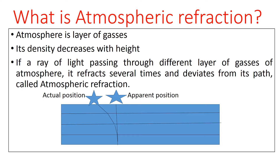In this figure we have discussed the actual and apparent position of a star. The refracted light coming from the star gives the actual position, and the direct light coming from the star is the apparent position. Whenever a ray of light coming from the star refracts through different layers of gases of the atmosphere before reaching to us.